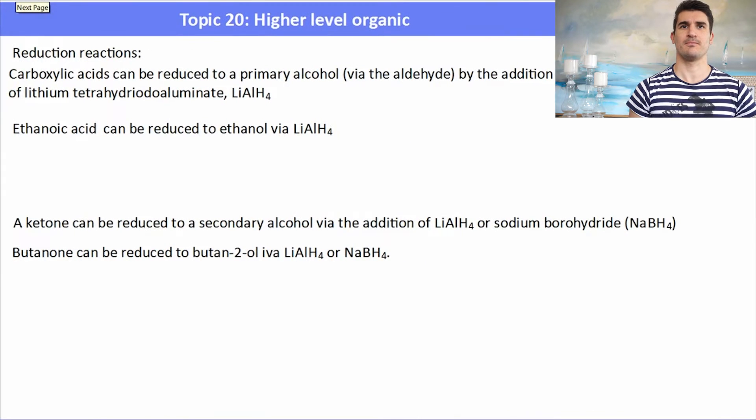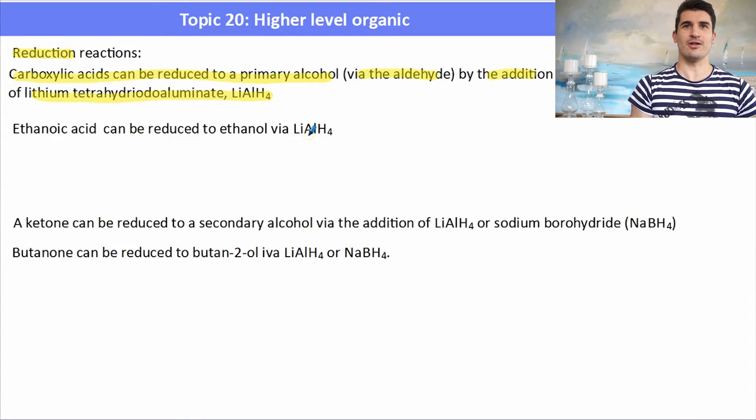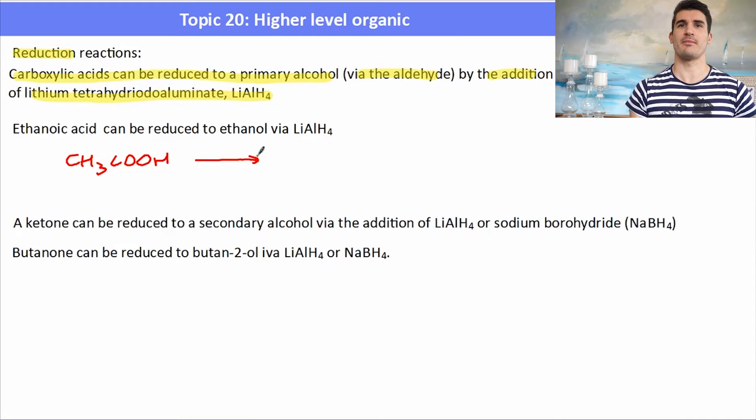Now, the reduction of a carboxylic acid. A carboxylic acid can be reduced to a primary alcohol via the aldehyde by the addition of lithium tetrahydridoaluminate, LiAlH4. LiAlH4 is the only chemical we can use to reduce a carboxylic acid to a primary alcohol. It's the only one strong enough to do it. Here we have ethanoic acid, and it can be reduced with acidic conditions in the presence of LiAlH4 to form first the aldehyde, and then upon more addition of LiAlH4, still under acidic conditions, we can convert back to our primary alcohol.